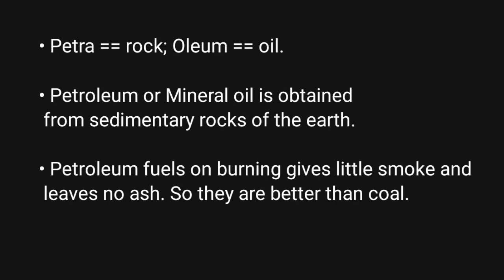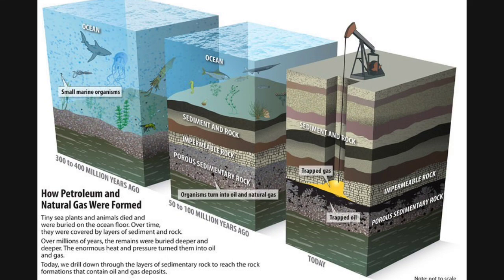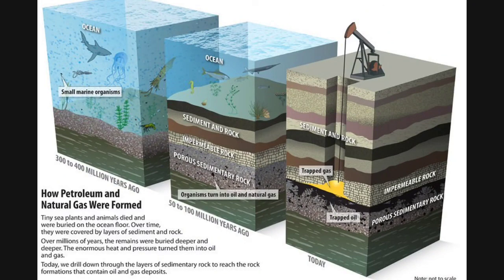'Petra' means rock and 'oleum' means oil, so it can also be termed rock oil. It is also referred to as liquid gold because of its highly versatile uses. Petroleum and natural gas were formed when marine sea plants and animals died and were buried under sediments layer after layer. Those sediments eventually turned into sedimentary rock, and due to the heat and enormous pressure, the organic matter eventually turned into petroleum oil or gas. We drill through those sedimentary rocks to reach the deposits containing oil and gas.